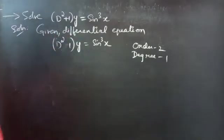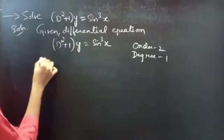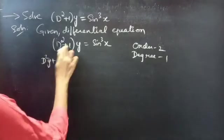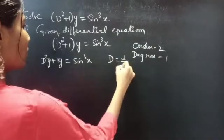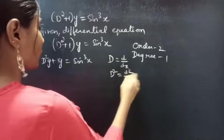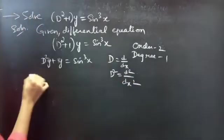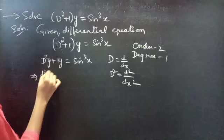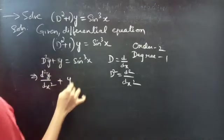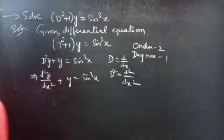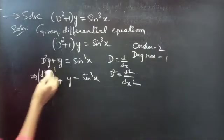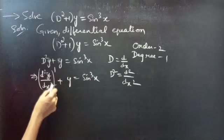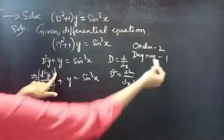Or just write the given equation as d²y + 1·y = sin³x. We know that differential operator D is d/dx, then D² will be d²/dx². So we can write the equation as d²y/dx² + y = sin³x. Identify the highest derivative: d²y/dx² is the highest derivative, so order is 2 and degree is 1.